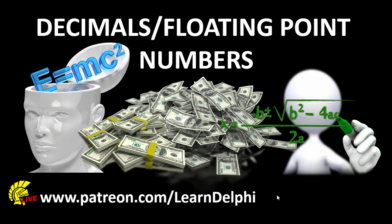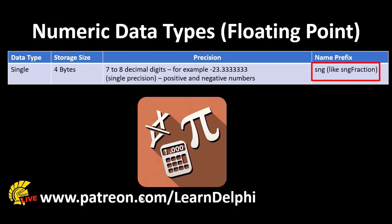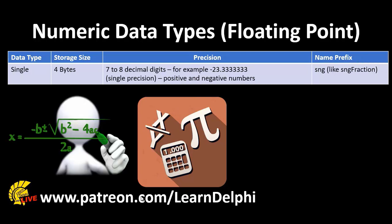Delphi also provides data types for decimal numbers. They are also called floating point numbers, or just floats in short. The first type of floating point number is a Single. The name refers to a single precision decimal number. Fractions can be stored with seven to eight decimal digit precision in a Single. The Single data type can also hold fractions smaller than zero — in other words, negative and positive numbers. The Single data type uses four bytes in storage. A Single's name starts with the three-letter prefix SNG. SNGFraction is therefore a suitable name for Single. If your calculations require single precision — up to eight decimal digits — you will declare a Single.